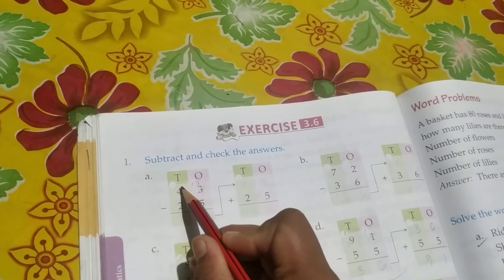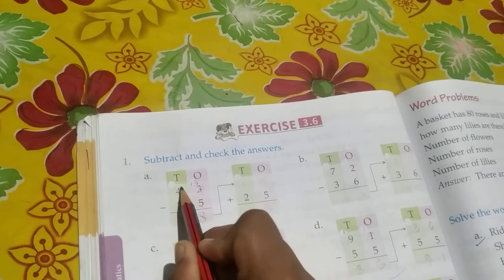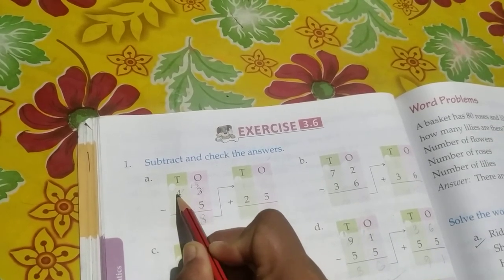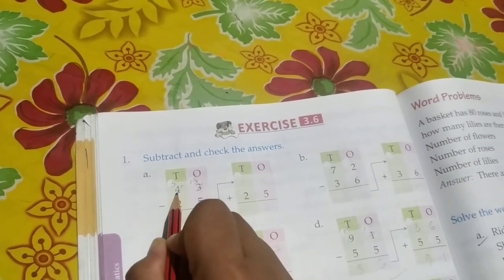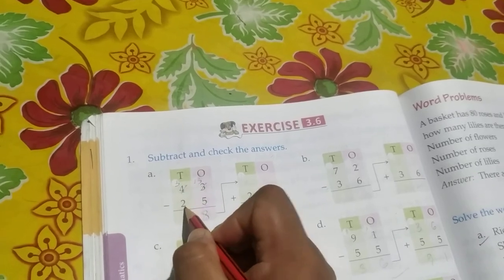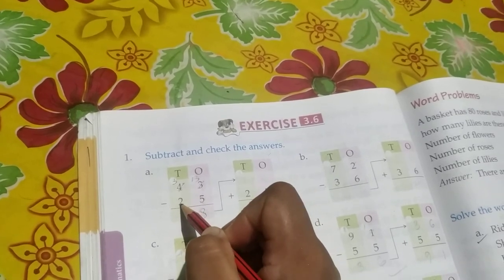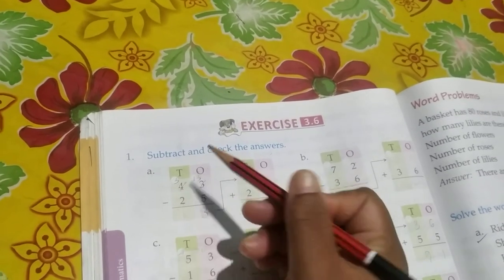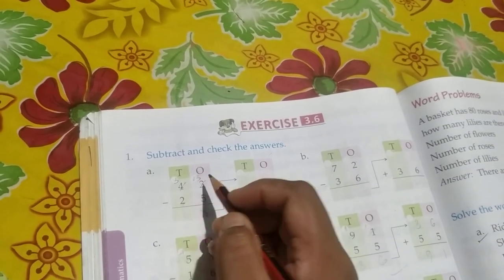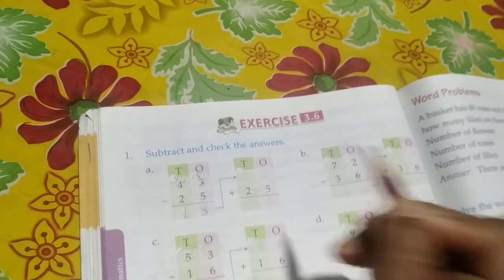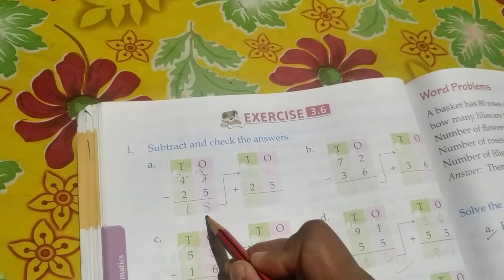Now since the 4 had given 1 to 3, it is not going to be 4 anymore, but it is going to be 3. So now it would be 3 minus 2. Since 2 is already smaller, we can minus easily. 3 minus 2 is equal to 1. We got the answer as 18. Now whether this answer 18 is correct or not, we have to check.